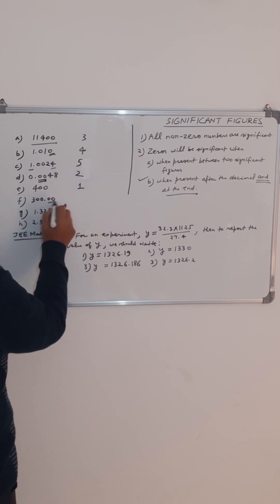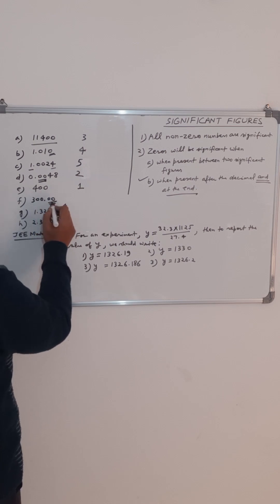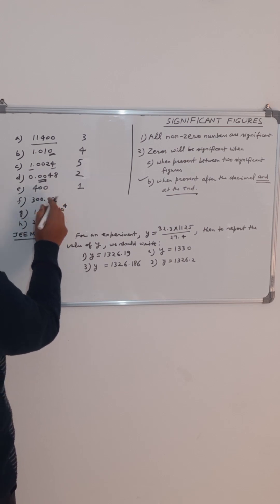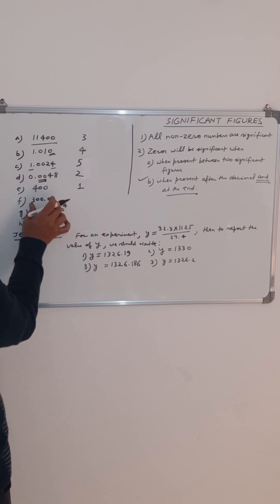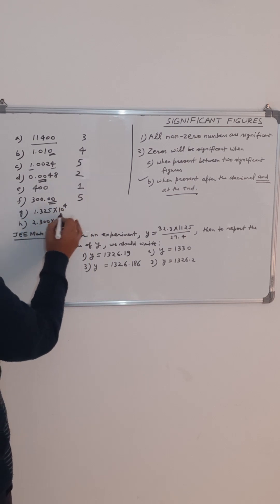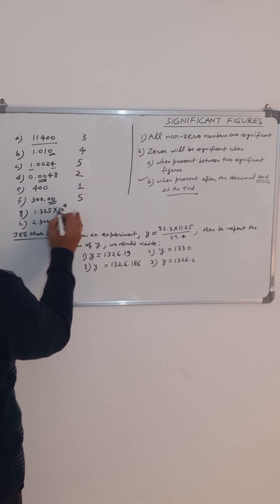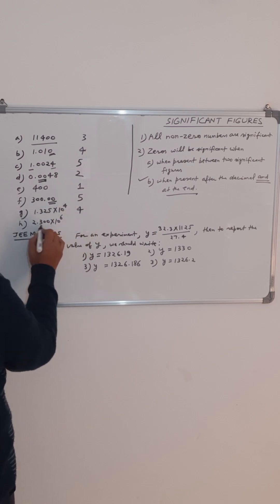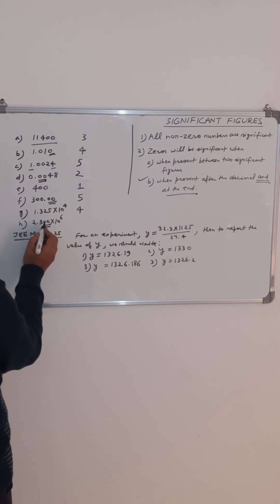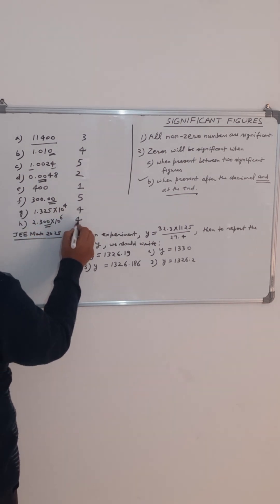In this case, these two zeros will be significant because they are present after the decimal. This zero is significant because it is at the end and after the decimal, and all three zeros will be significant because they are present between two significant figures. So total there are five significant figures. In this case, 10 to the power 4 is not considered significant, so there are four significant figures. In this case, these two zeros are significant because they are present after the decimal and at the end, and this zero is significant because it is present between two significant figures, so there are total two significant figures.